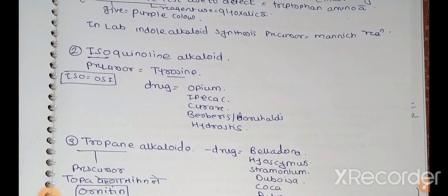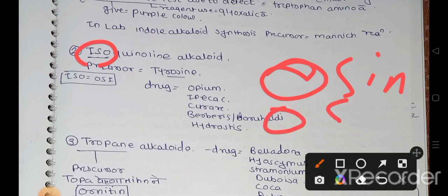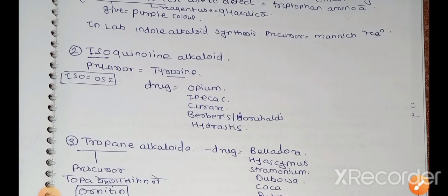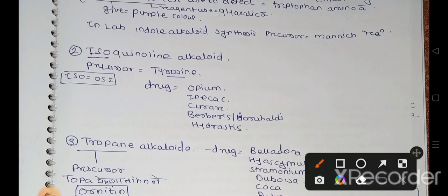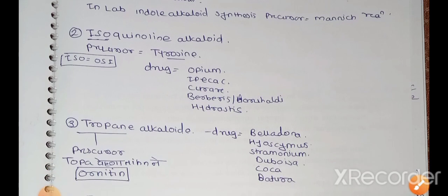After that, the second alkaloid is isoquinoline alkaloid. The precursor used for synthesis of isoquinoline alkaloid is tyrosine. How do you remember tyrosine? Tyrosine - take O-sine, and this is iso. When we turn on iso, we turn on these three words: O-I-S. You must remember the precursor is tyrosine. The drugs that come under isoquinoline alkaloid are opium, ipecac, curare, berberis which is also called daru haldi.